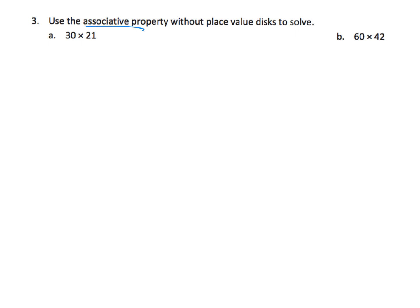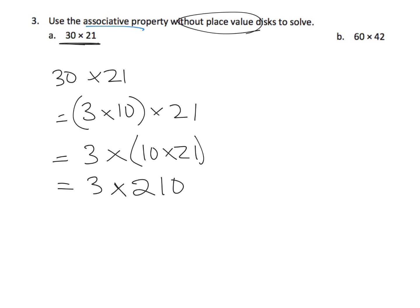Now it says continue using that associative property, only this time we're not going to do the place value disks. So let's start with this one. Let's do 30 times 21, and that equals 3 times 10 times 21, which is equal to 3 times 10 times 21. And by now we want our students to know that 10 times 21 is 210 times 3. And then we want students to use logic. Well, you have 200s times 3, so that gives us 600s. You have 1 ten times 3, that gives you 3 tens. And you have no 1s times 3, that gives you nothing. So 210 times 3 gives you 630. So that means 30 times 21 is equal to 630.